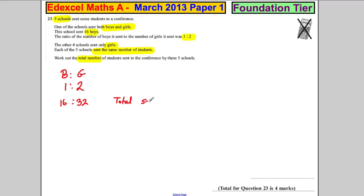So total from school 1 would be 16 plus 32, which is 48 pupils.